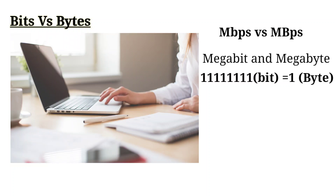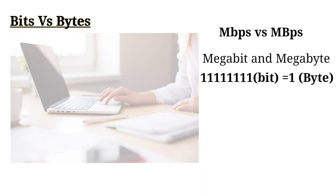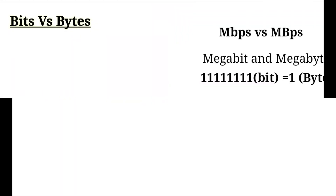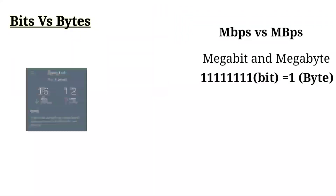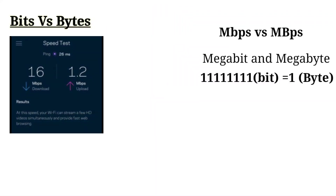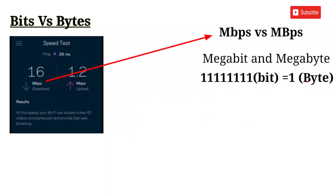We are going to do a speed test. We have 16 Mbps on the speed test. The speed test shows a small letter 'b', which stands for bits per second.